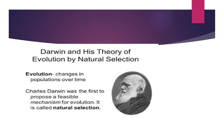Darwin and his theory of evolution by natural selection: evolution means changes in the population over time. Charles Darwin was the first to propose a feasible mechanism for evolution, and it is called natural selection.